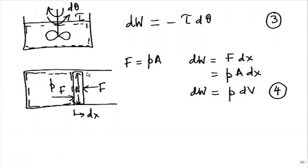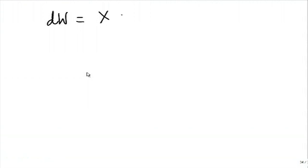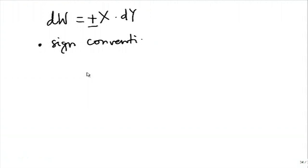What we notice is that each one of these interactions is of the type dW = X dY, sometimes plus and sometimes minus. We note first that this plus or minus means there is some sign convention involved — otherwise we would not be consciously writing a minus sign somewhere.